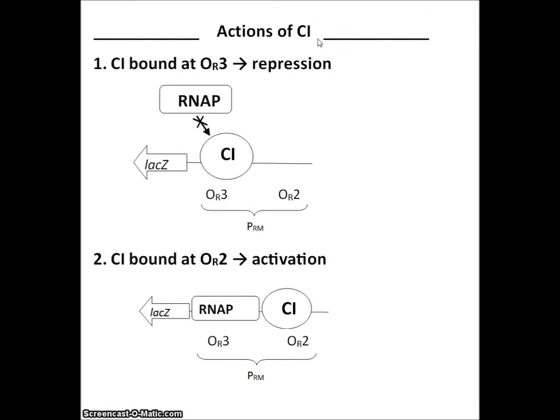C1 has two modes of action. First, C1 protein when bound at OR3 represses transcription. It does this by preventing RNA polymerase from binding to promoter PRM. Alternatively, if C1 is bound at OR2 beside adjacently bound RNA polymerase, then it activates transcription. So C1 can either repress or activate transcription of LACZ.